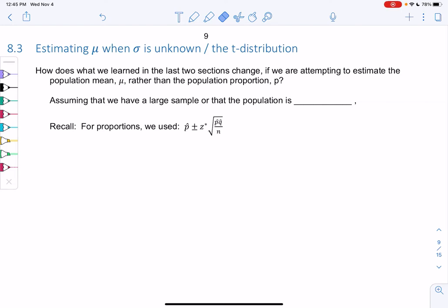Section 8.3, estimating μ, which means we'll be finding confidence intervals for the mean. We're in mean land now. So we'll estimate μ, we won't know σ, so the standard deviation is unknown. And then we're going to use this thing called the t-distribution.